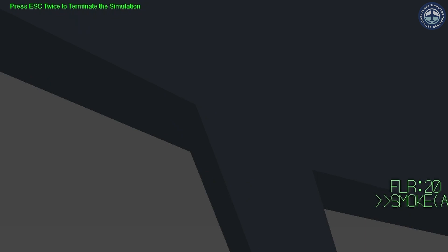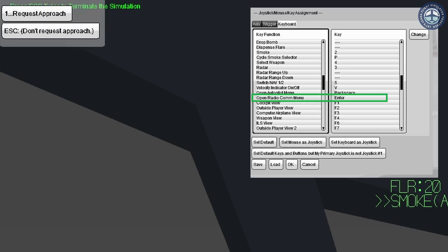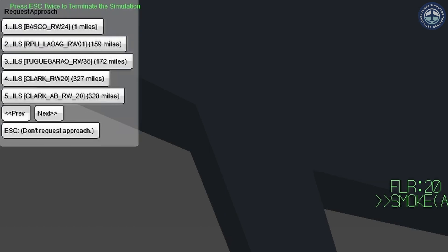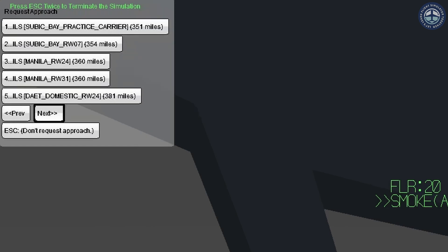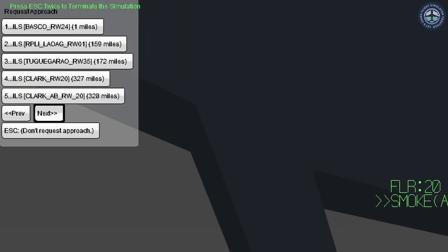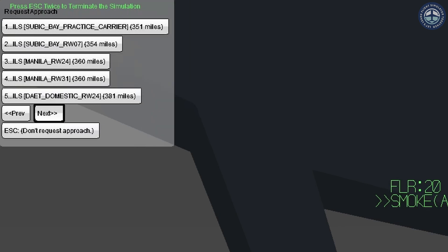Let's start by requesting approach to our destination airport, Manila, using IFR. To access IFR, open the radio communication menu and click Request Approach. Select your desired destination approach by pressing the number button corresponding to that airport. Use the Next or Previous button to see more airports. I am going to press either 3 or 4 to fly to Manila, depending on what runway I want to approach.